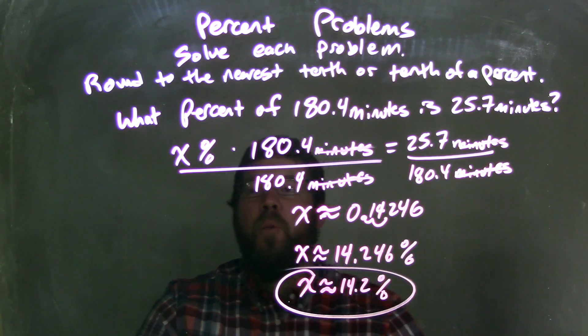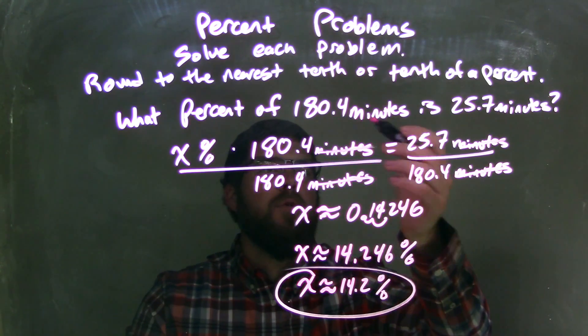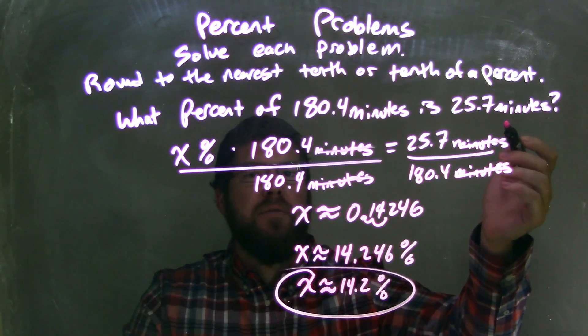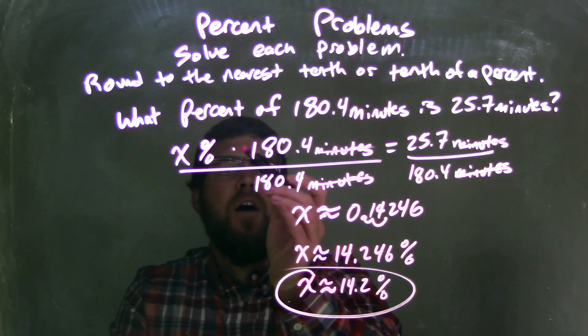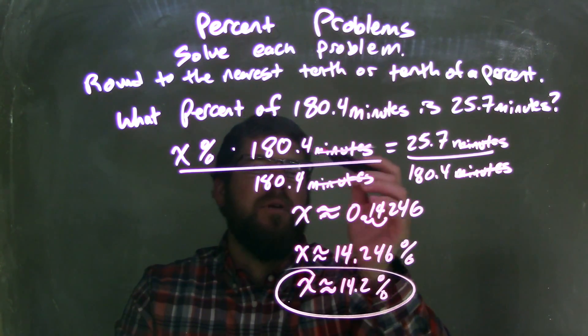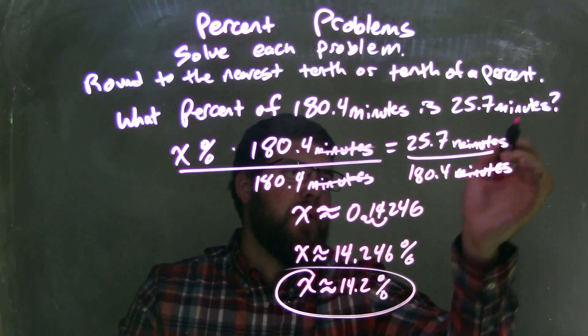So let's recap. We were asked the question: what percent of 180.4 minutes is 25.7 minutes? I wrote that as an equation. x, what percent of, multiplication, 180.4 minutes is, equal sign, 25.7 minutes.